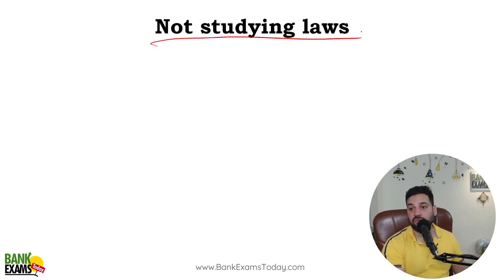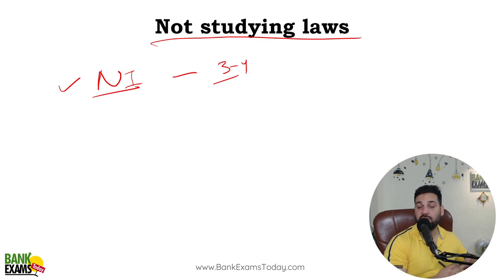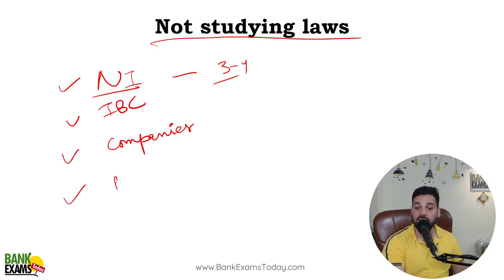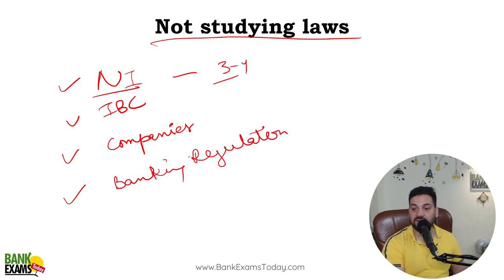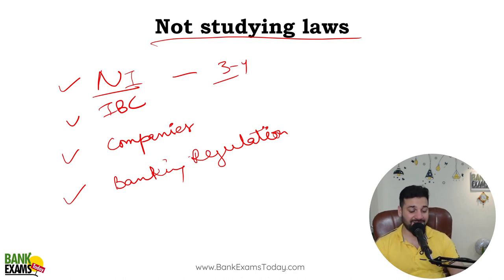Mistake 3: Not studying laws. I have seen many students who have never studied the Negotiable Instrument Act — that is really bad. You may get 3-4 questions out of 40 from this area. There is also the IBC (Insolvency and Bankruptcy Code), and even the Companies Act — questions come from that too. The Negotiable Instrument Act and the Banking Regulation Act are very, very important. These come up frequently in exams, and not reading any law makes it very difficult to get good marks.